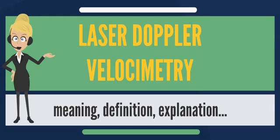Particles passing through this volume will scatter light from the measurement beam with a Doppler shift. A portion of this light is collected by the receiving optics and transferred to the photodetector. The reference beam is also sent to the photodetector, where optical heterodyne detection produces an electrical signal proportional to the Doppler shift, by which the particle velocity component perpendicular to the plane of the beams can be determined.